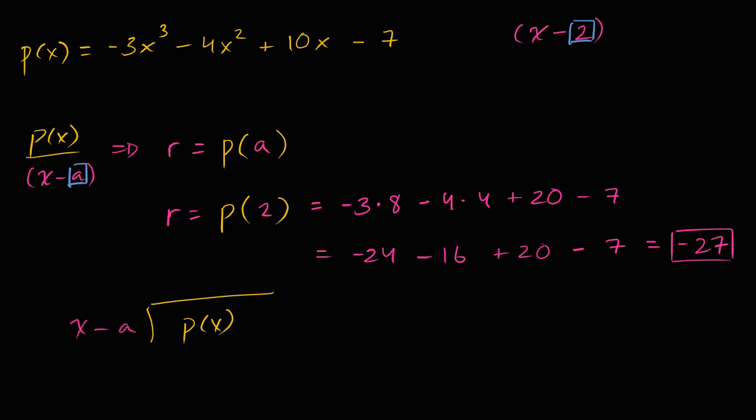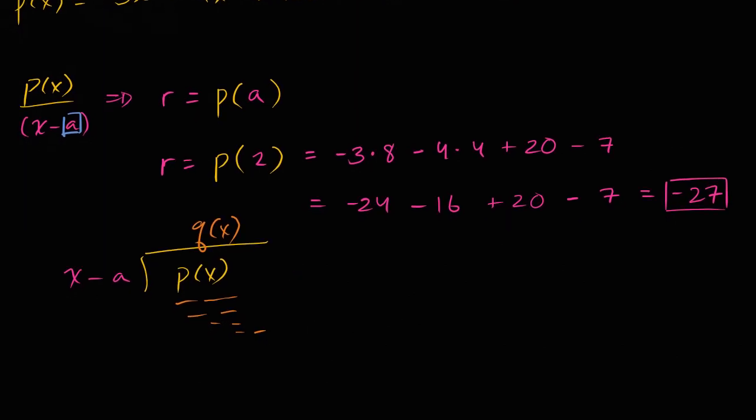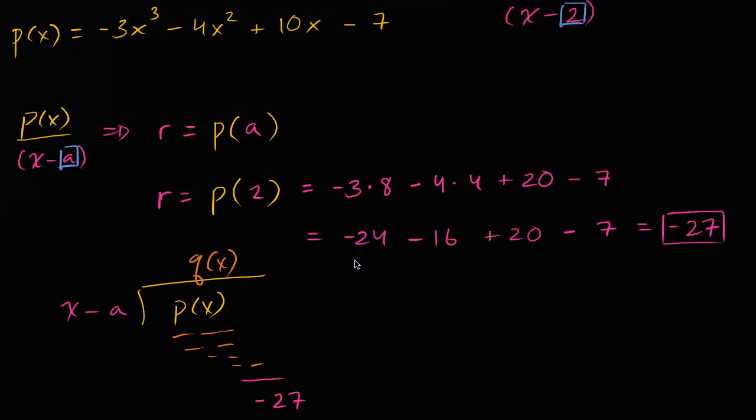and we would have gotten a quotient here, q of x, and we would have done all this business down here, all this algebraic long division, probably wouldn't have even fit on the page. But eventually, we would have gotten to an expression that has a lower degree than this, essentially a zero degree constant. So we would have eventually gotten to our negative twenty-seven. But this was much, much easier than having to go through this entire exercise. Hopefully you appreciated that.